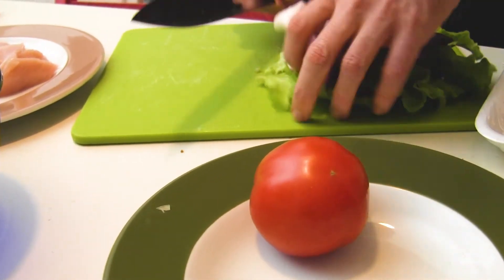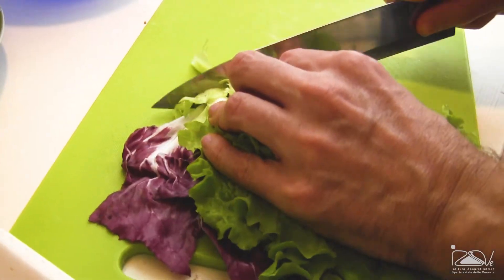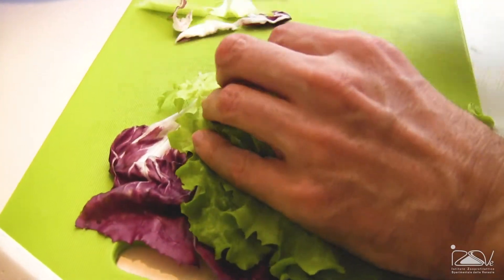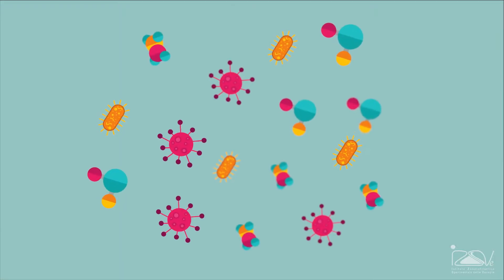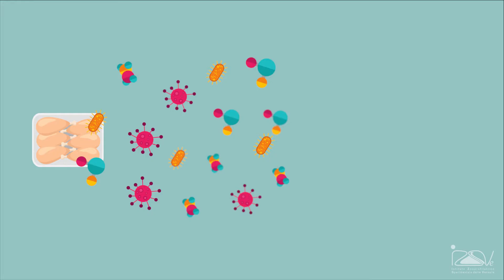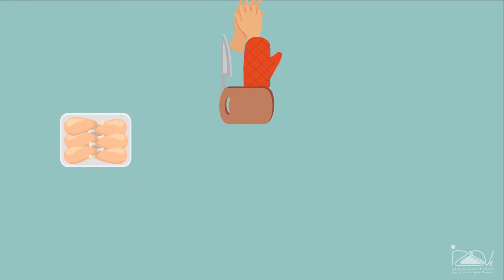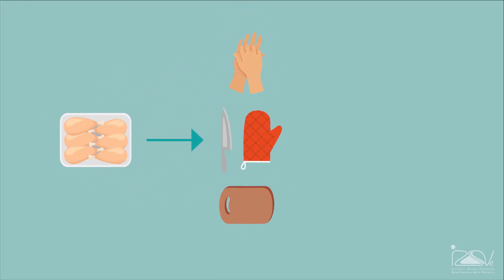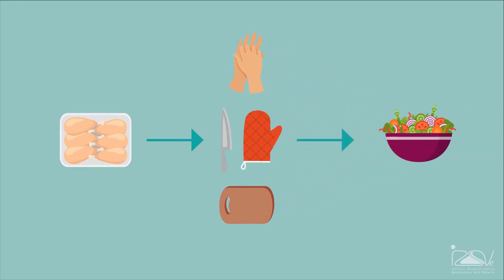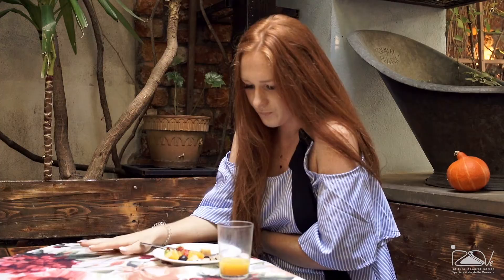In the latter case, contamination is a two-stage process. First, the microorganisms or substances present in a food are transferred to hands, surfaces or utensils. Then, in turn, these are transferred to other foods by contact.